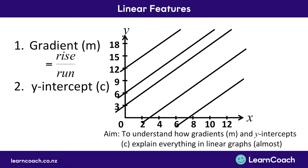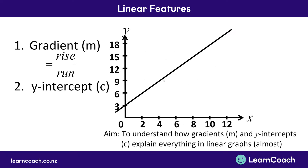This top line has a y-intercept of 12 because it crosses the y-axis at 12. The next line has a y-intercept of 6, and the middle line has a y-intercept of 3. This middle line crosses the y-axis at 3, so our y-intercept is 3. This is as simple as reading it straight off the graph — where the line crosses the vertical axis. Don't get it mixed up with the horizontal axis; just look at the vertical axis.